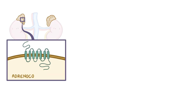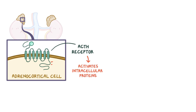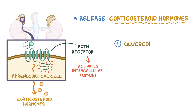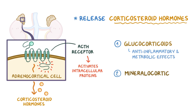Zooming back into the adrenocortical cells, the ACTH receptor is a seven-pass transmembrane receptor, meaning it is a really long protein that has one end that sits outside the cell and binds ACTH. The snake-like protein dips in and out of the cell membrane seven times and finally ends on the inside of the cell, where it activates intracellular proteins. When ACTH binds to the ACTH receptor, it causes the adrenocortical cells to release corticosteroid hormones, mainly glucocorticoids, which have anti-inflammatory and metabolic effects, but also mineralocorticoids to some extent, which influence electrolyte and fluid balance.